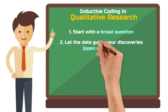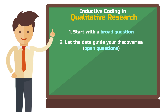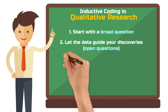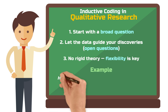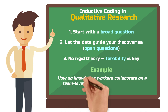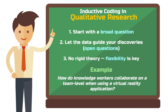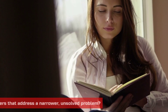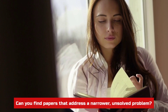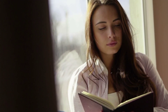For your interview questions, this means that they are very open and you lead the interview to where it gets interesting, rather than structuring your questions strictly according to a theory you read about. A suitable overarching question for our example could be: how do knowledge workers collaborate on a team level when using a virtual reality application? You can get more specific if you think this question has been addressed multiple times in previous research, but for simplicity we'll stick with this question. In your literature review, you aim to become an expert in this area and check if you find helpful papers that you could build on to solve a more narrow problem that previous research has not tackled.